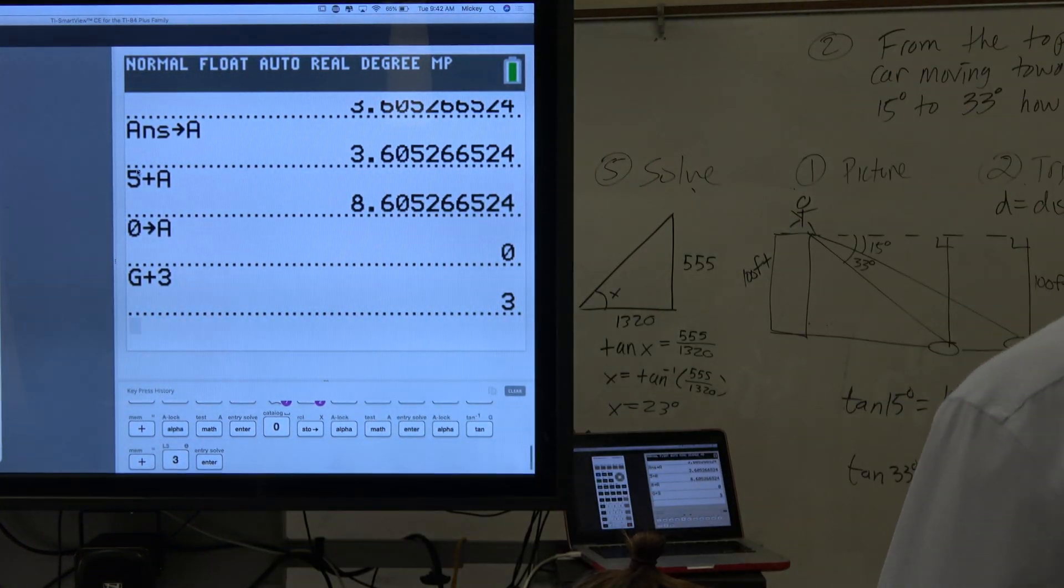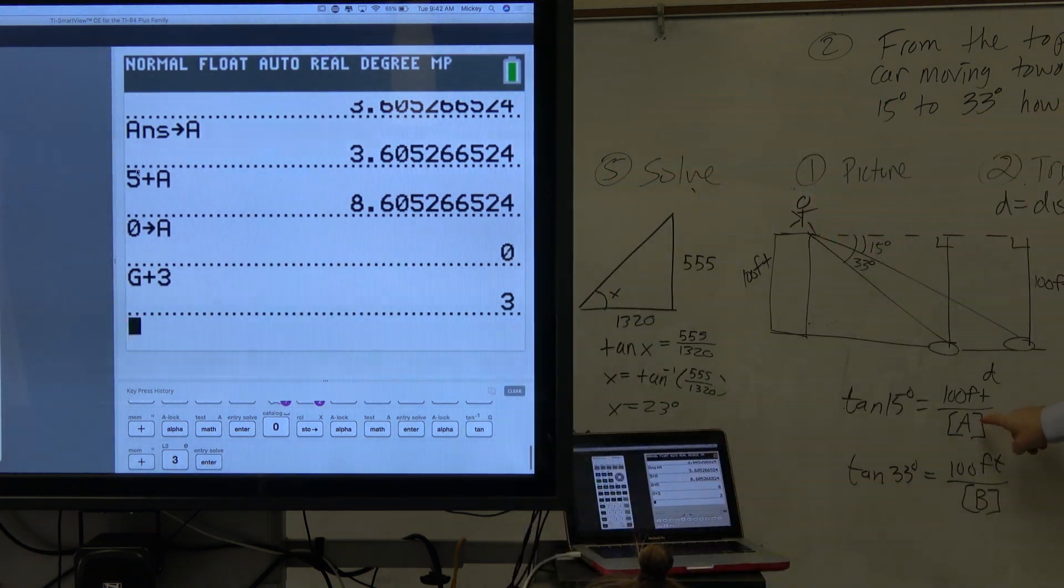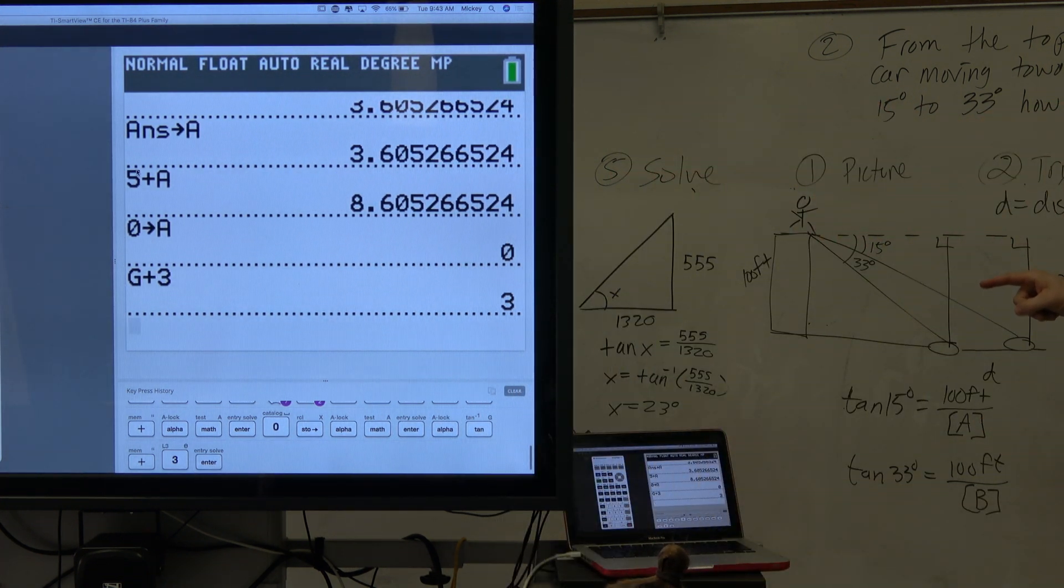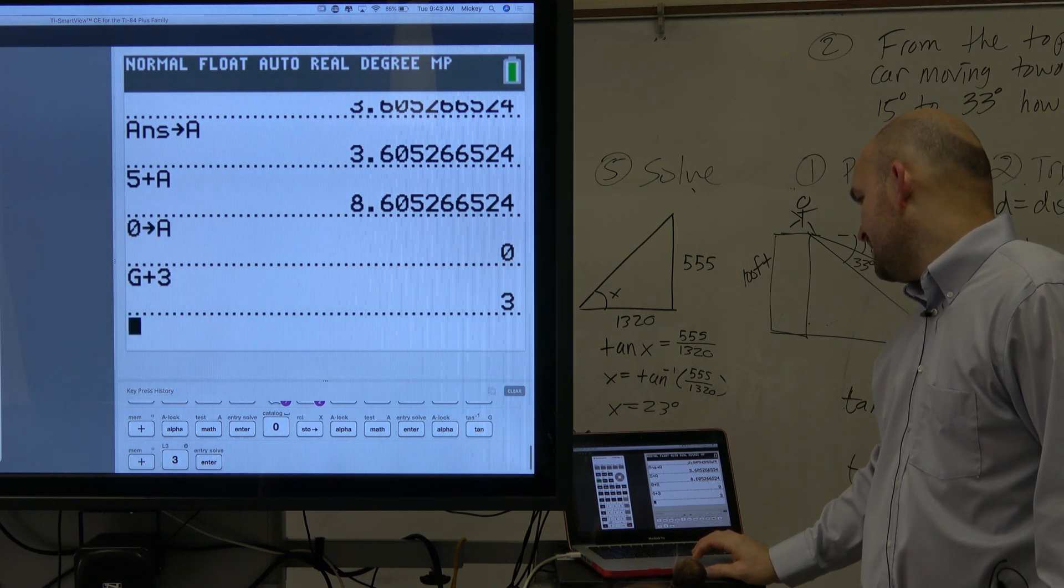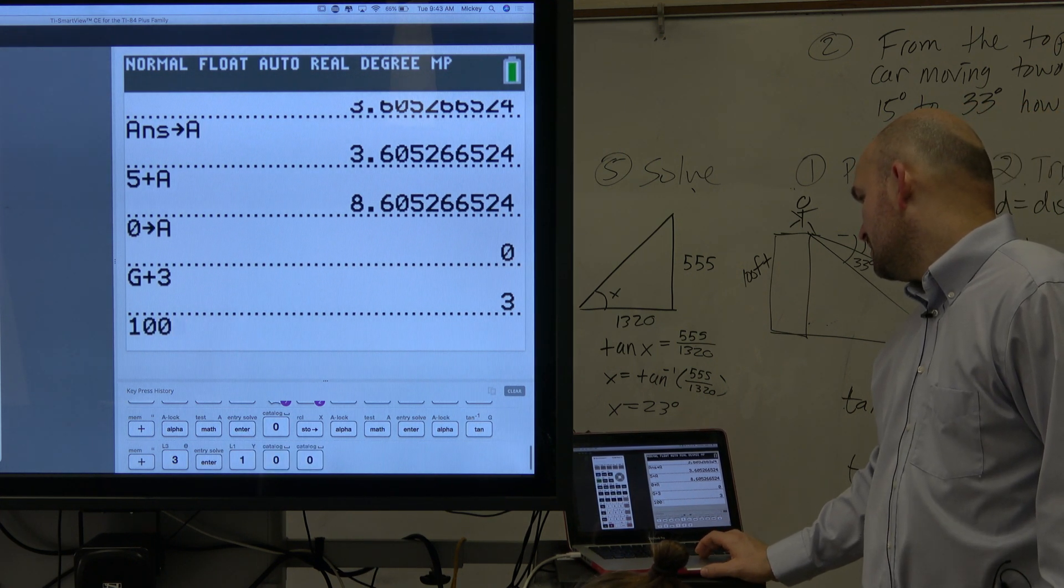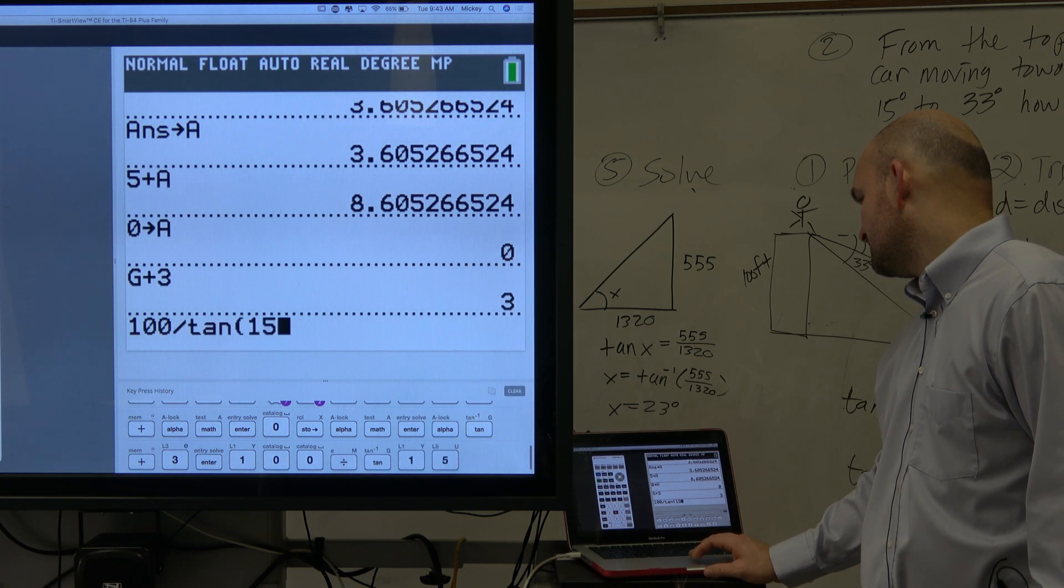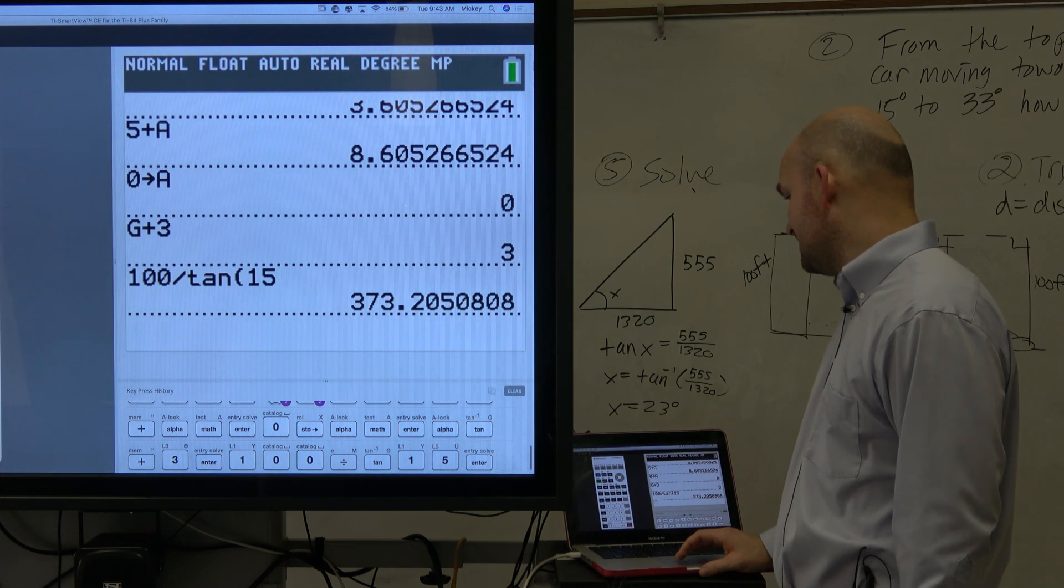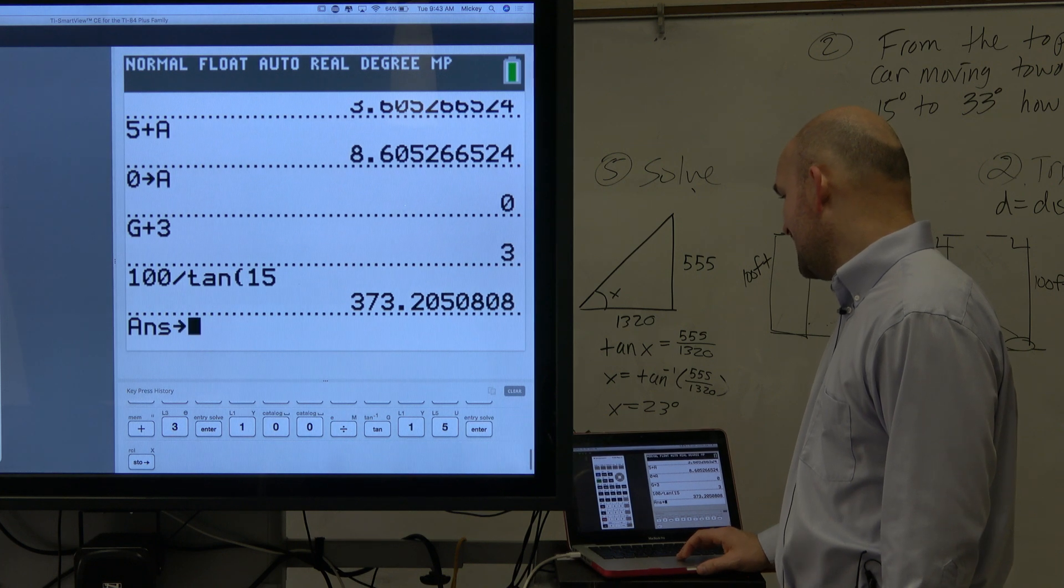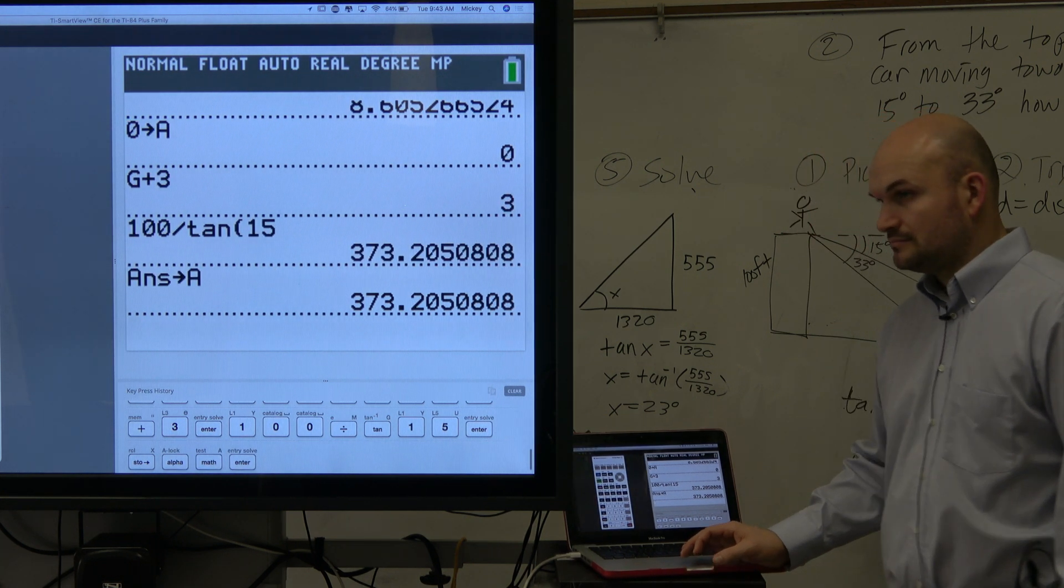All right, so now you guys can see it. All right, so if we're going to type this in, again, for this one, if I was to solve for a, you'd multiply by a, both sides, divide by tangent of 15 degrees. So basically, this is just going to be 100 feet divided by the tangent of 15 degrees. Right, so we get 373. Now, again, guys, what we're going to want to do in this case is store this as alpha a, all right?